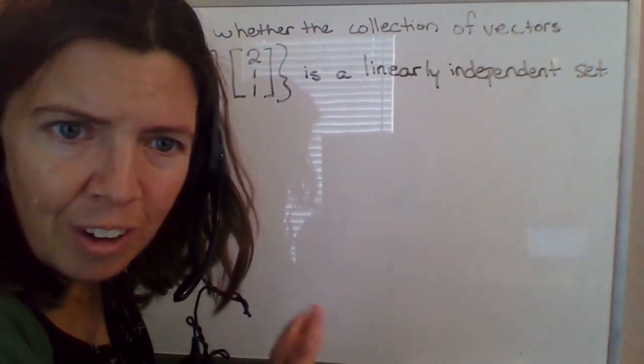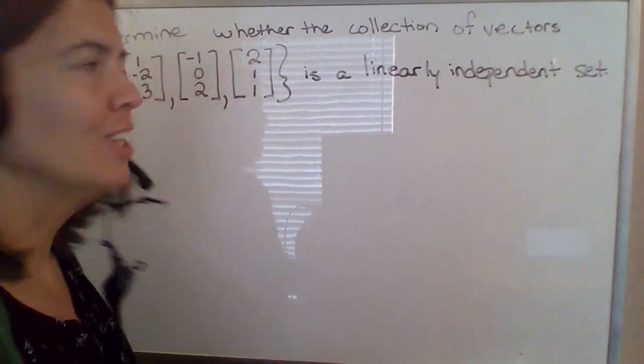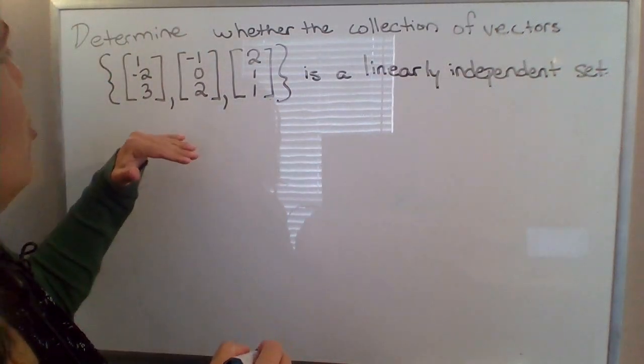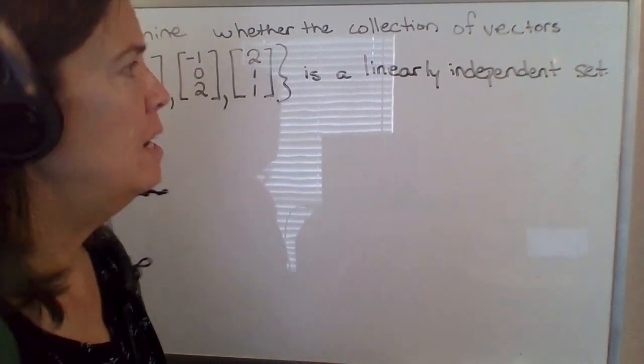All right, here's an example. Sorry for the glare from the window behind me. I just feel like I have to acknowledge it. But here we're trying to determine whether a collection of vectors is a linearly independent set.